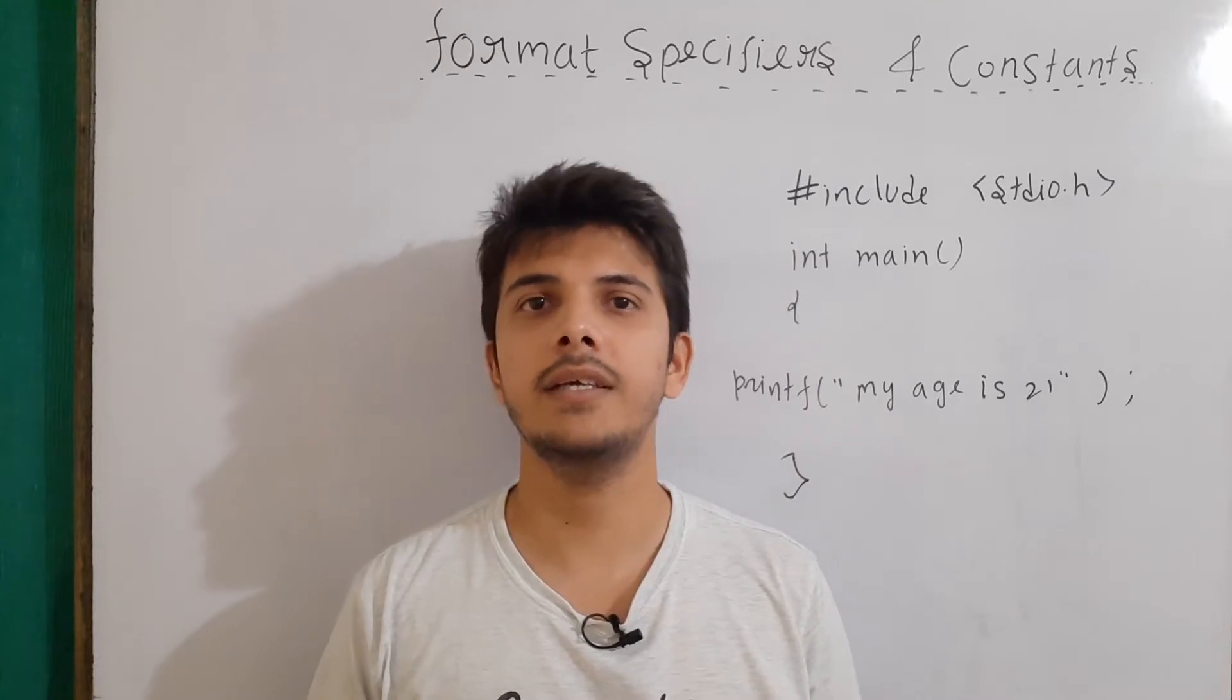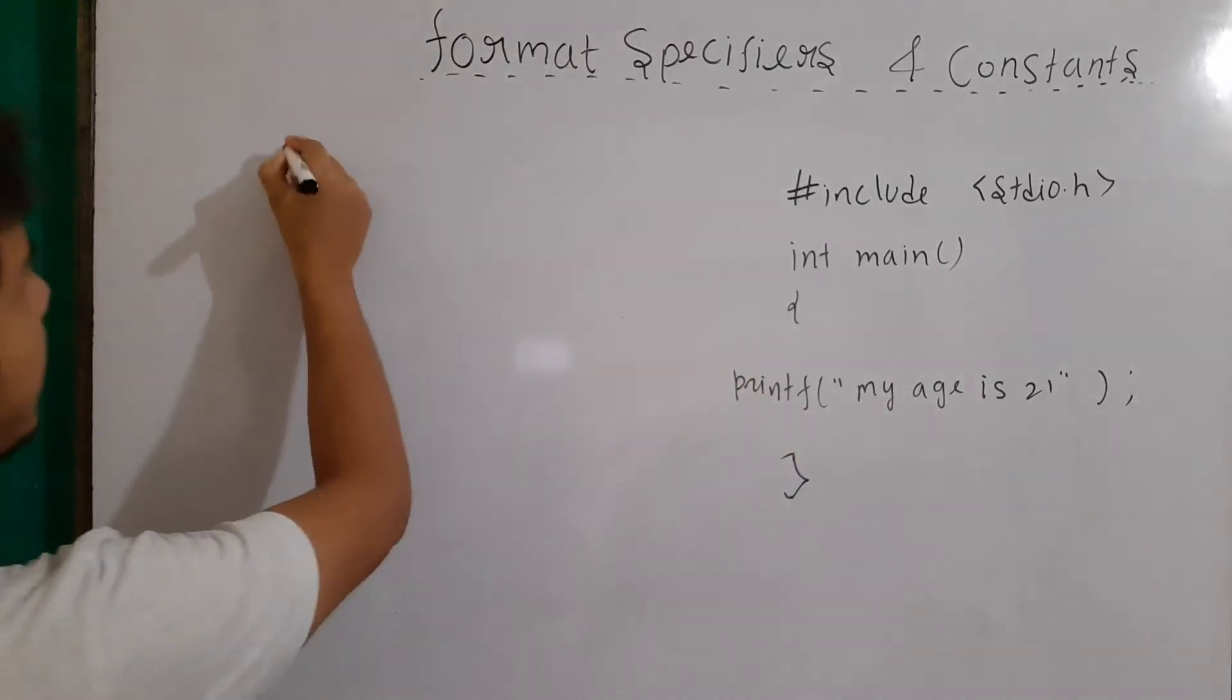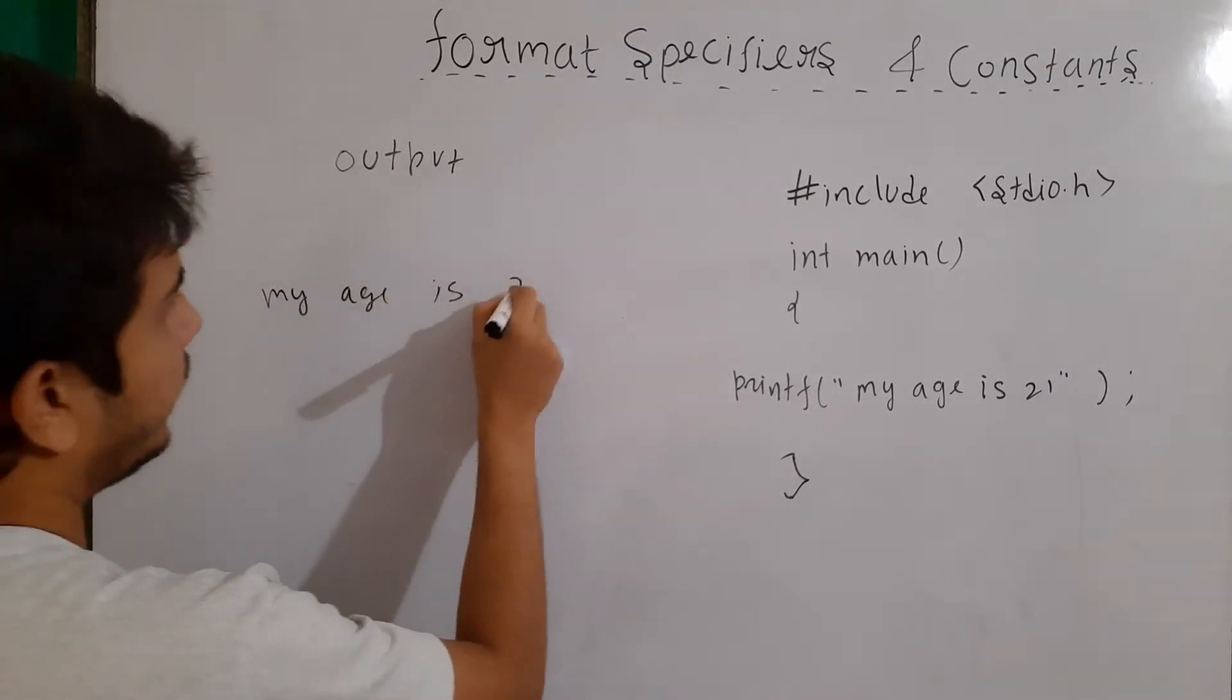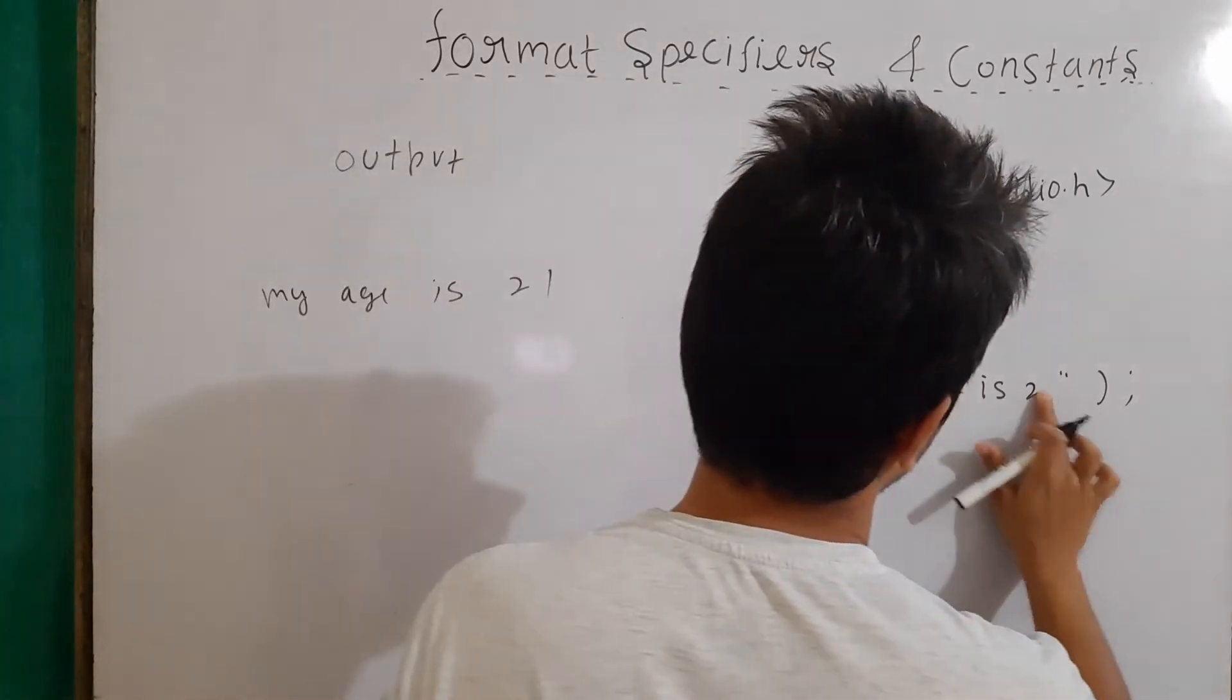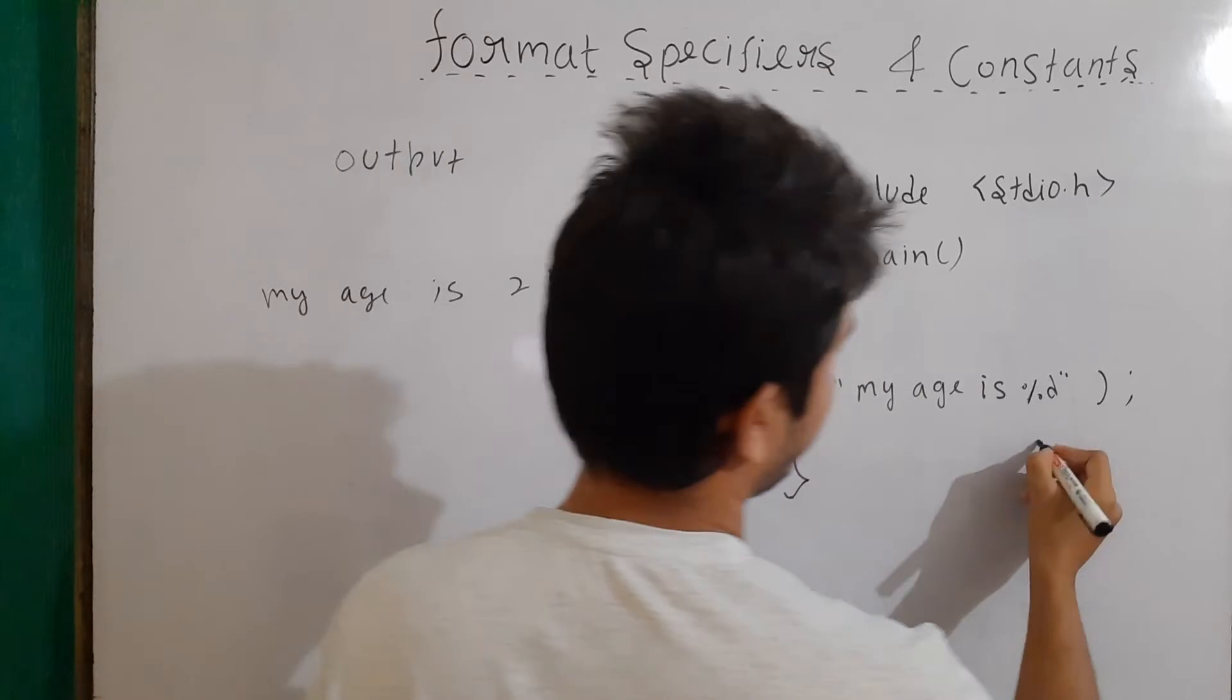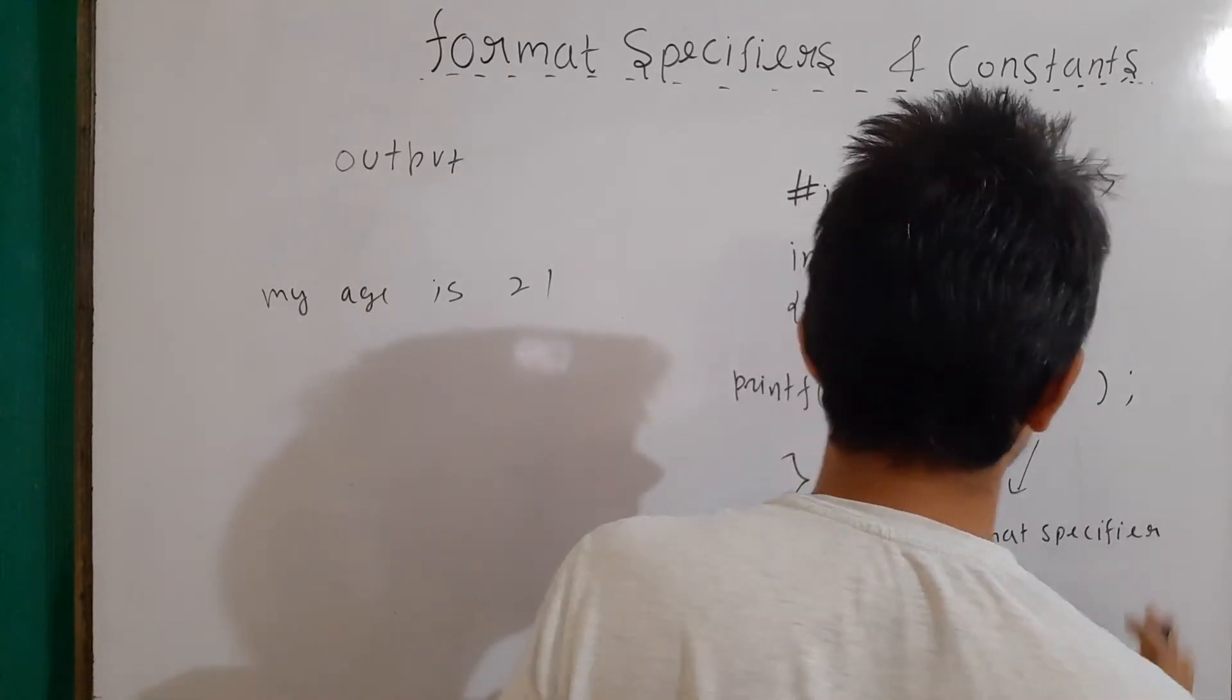Let's say I want to print that my age is 21. So basically, I can write here printf my age is 21 and in the output, it will show me as my age is 21. But there is another way. Instead of writing 21, I'll write here %d. %d is a format specifier for the integer values.